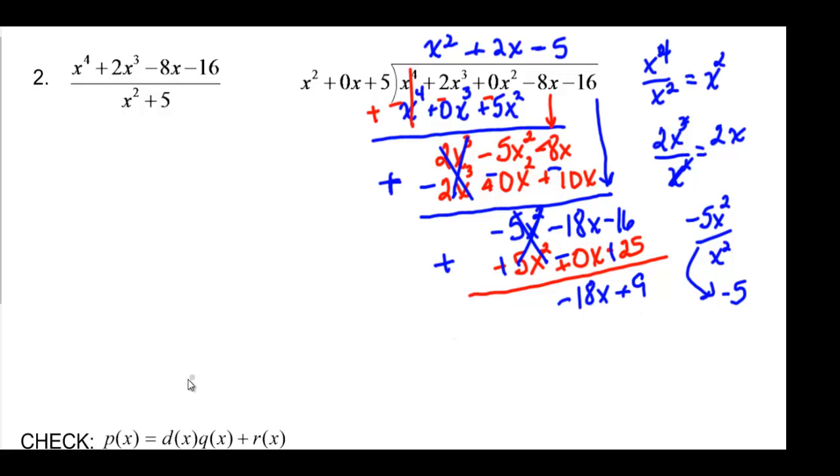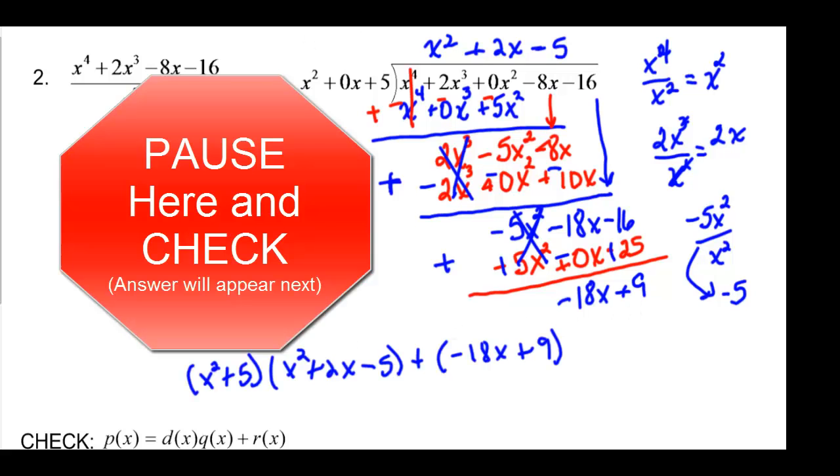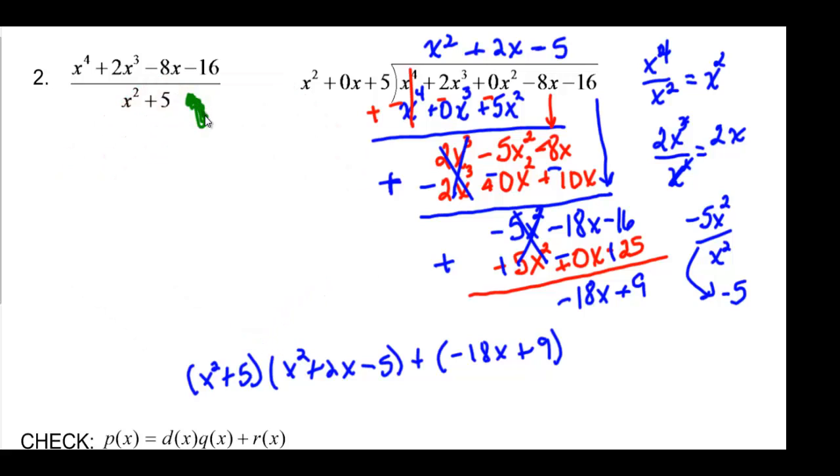And we would check by saying, so this is my dividend. This is my quotient. And this is my remainder. And this is P. And you can go ahead and multiply that all out and check for yourself. But you should come up with X to the fourth plus 2X cubed minus 8X minus 16.